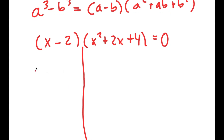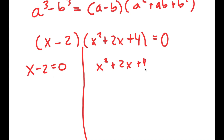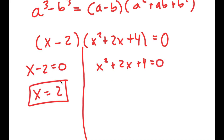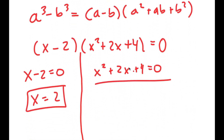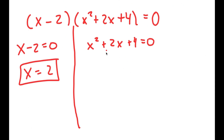So now I get two equations: x - 2 = 0 and x² + 2x + 4 = 0. For x - 2 = 0, I get x = 2, which was a solution that we already got. But now on top of this, we have a whole other equation with two more solutions because it's a quadratic equation.